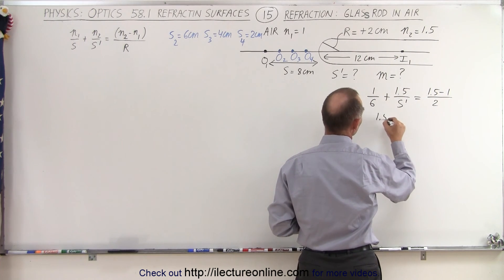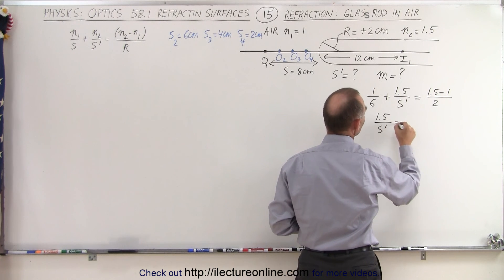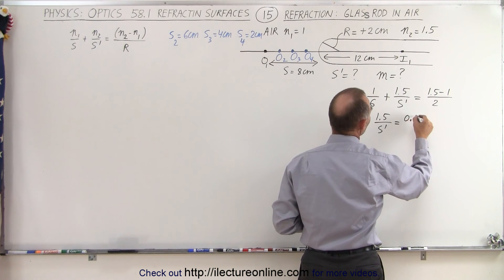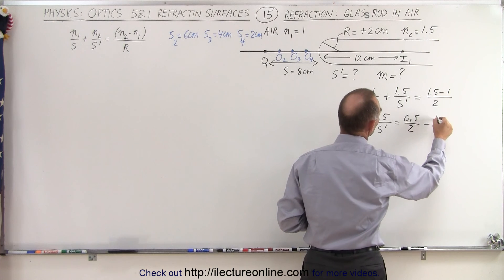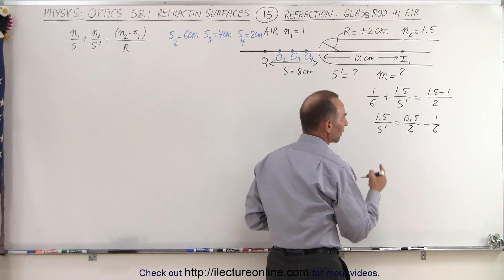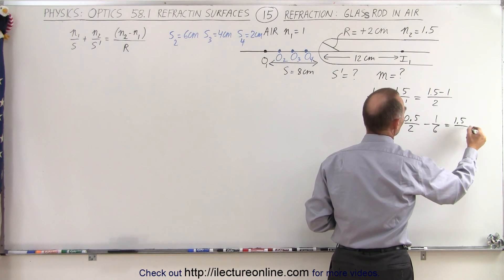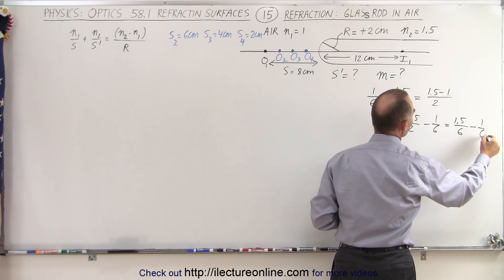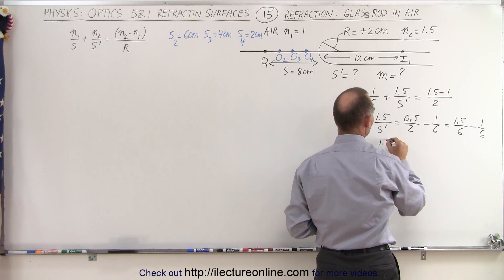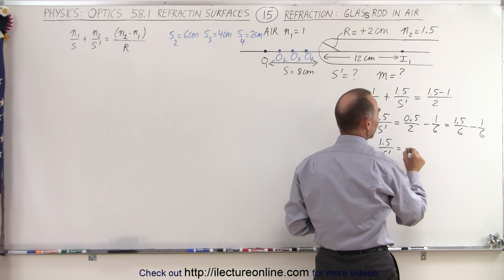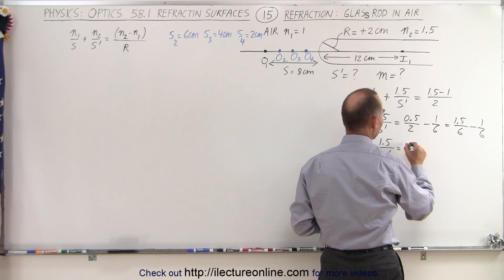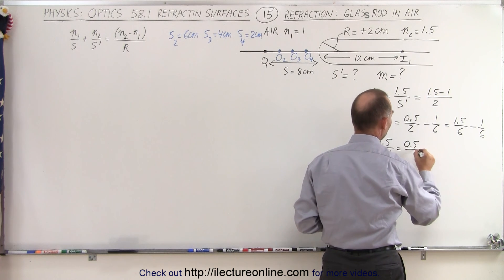So here we get 1.5 over s prime is equal to 0.5 over 2 minus 1 over 6. The common denominator here is 6, so this will be equal to 1.5 over 6 minus 1 over 6. So we have 1.5 over s prime is going to be equal to positive 0.5 over 6.